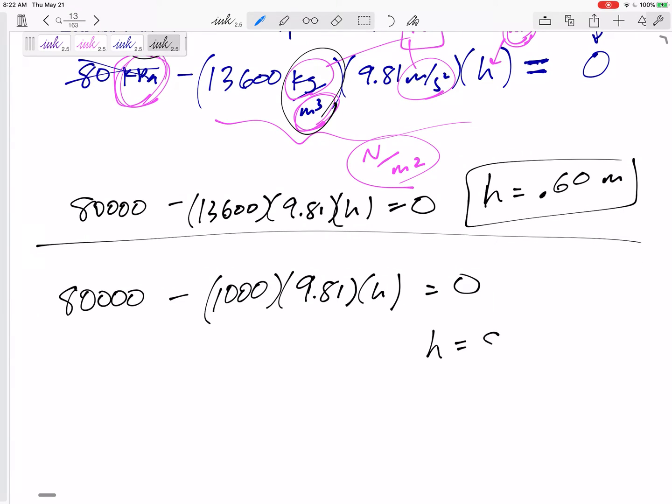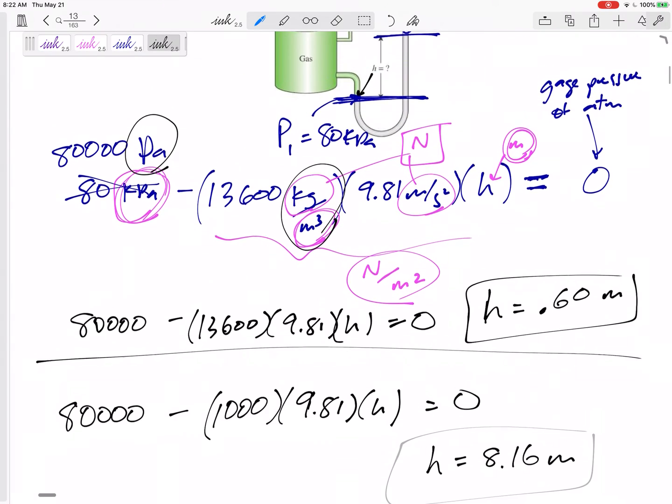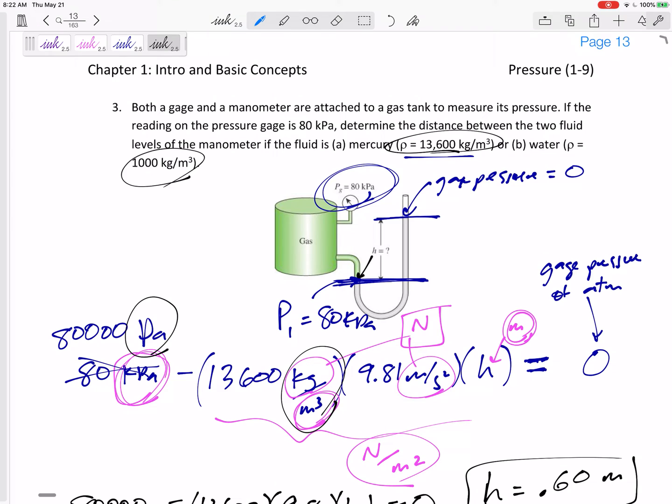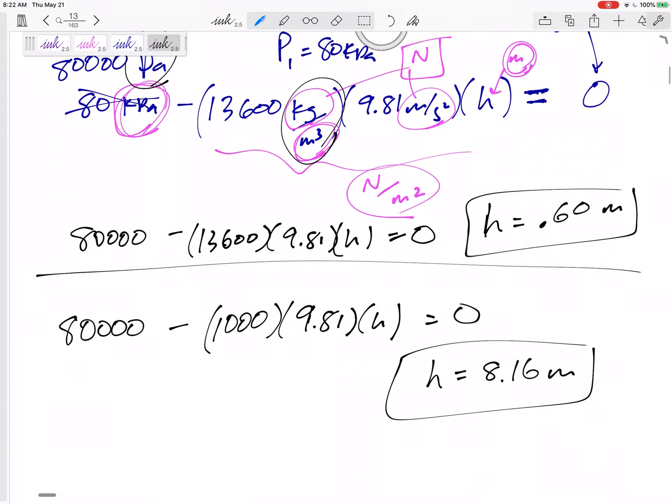So here the height would be 8.16 meters. Does that make sense? Yeah, the density was a lot less, and so to get from 80 kPa to zero, you would need a lot of height to get that change in pressure, rho g h. See, that's why we use mercury.